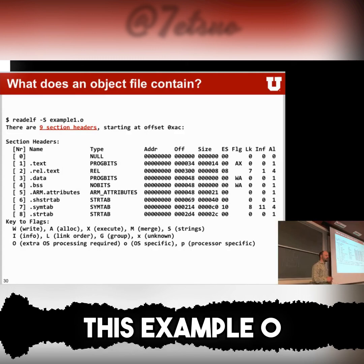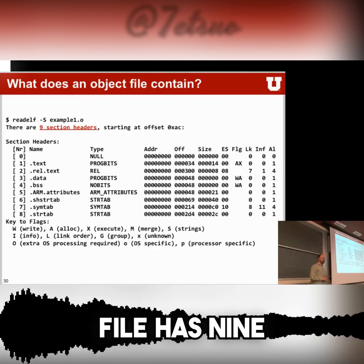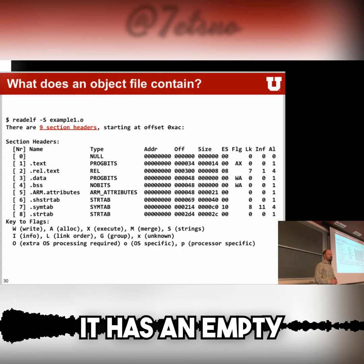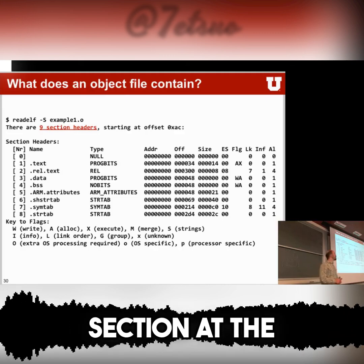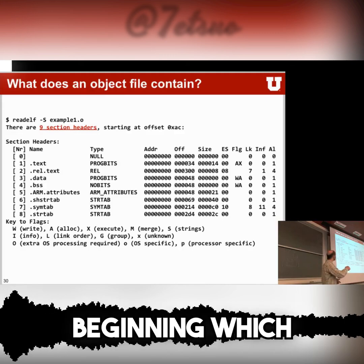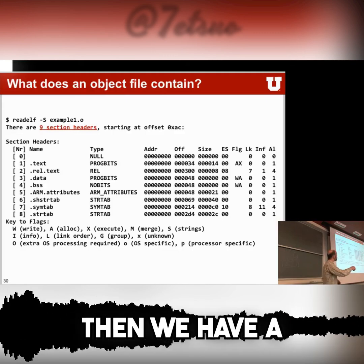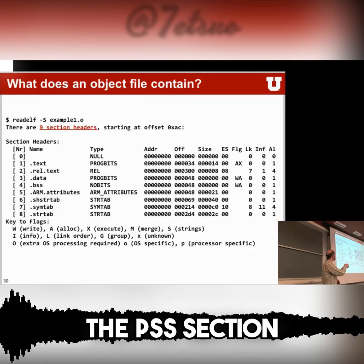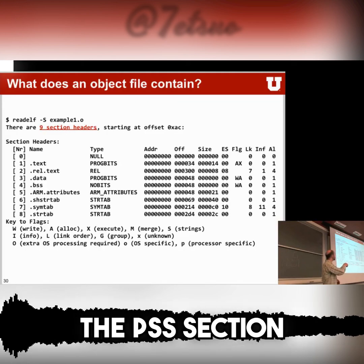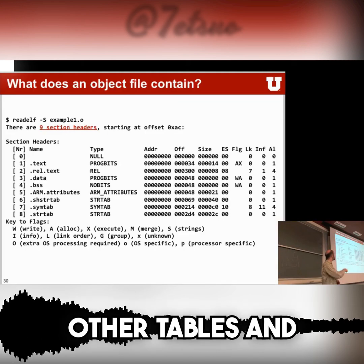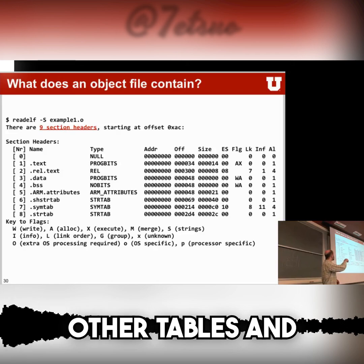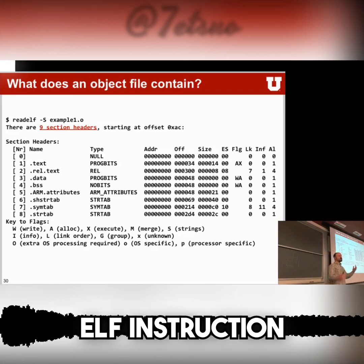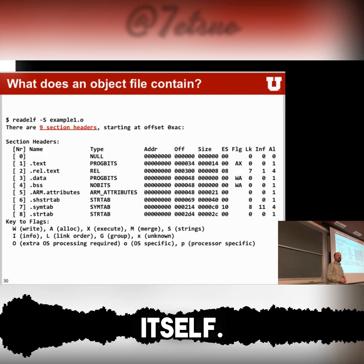In this particular case, this example.o file has nine different sections. It has an empty section at the beginning which has zero size. Then we have a text section, a data section, the BSS section, and a couple of other tables and files that are sections in the ELF structure itself.